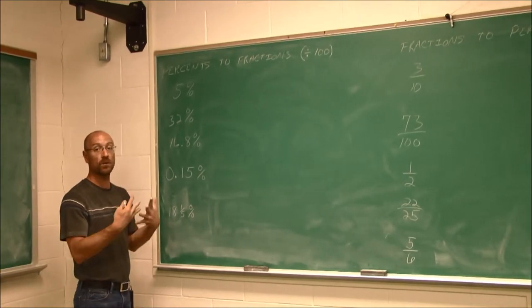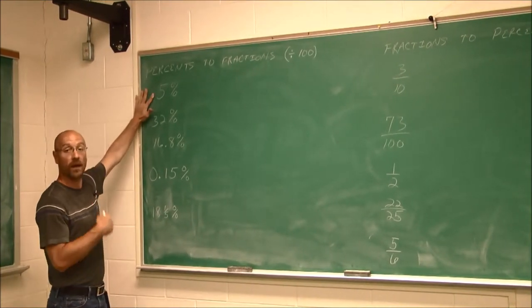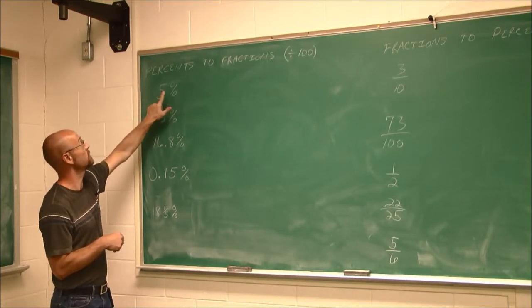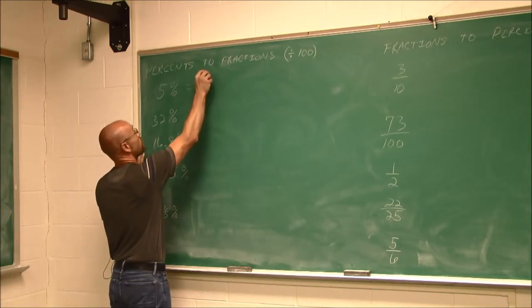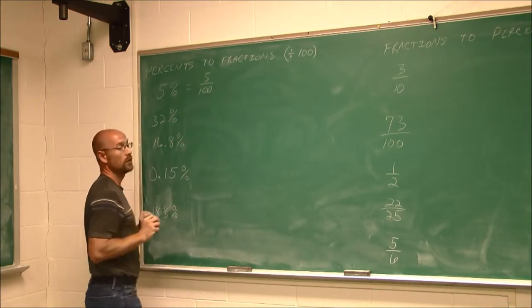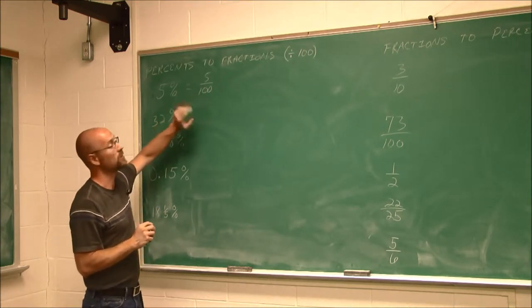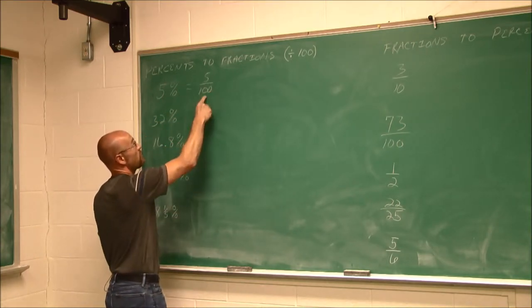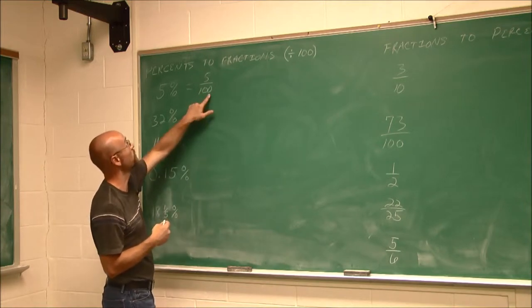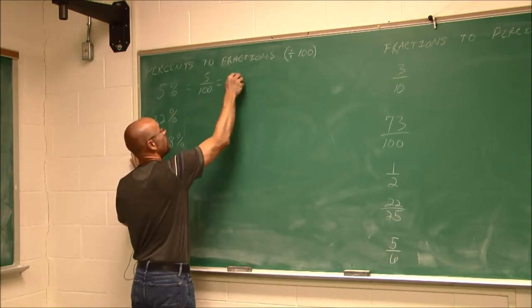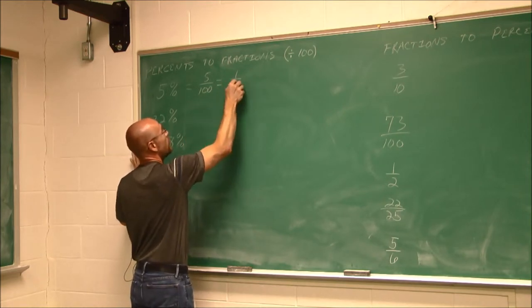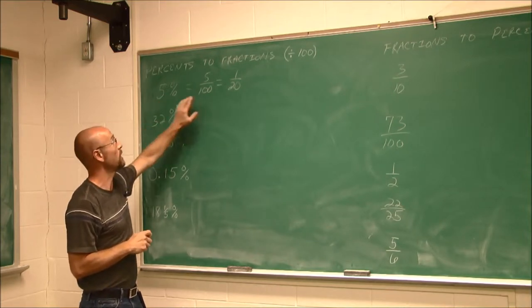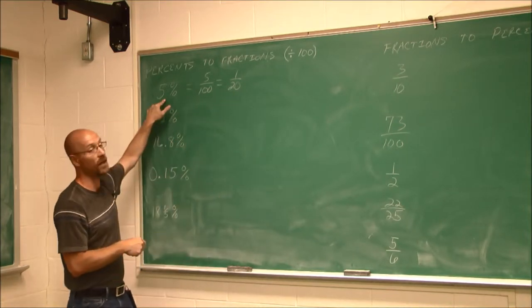Now, what if we're given a percent and want to go to a fraction? The easiest way is to write it as a fraction right from the start. 5% means 5 divided by 100, so we write 5 over 100. Then we reduce: 5 and 100 have a common factor of 5, so dividing both gives us 1 twentieth. So 1/20 is the same as 5%.